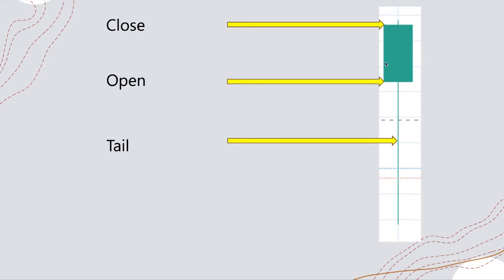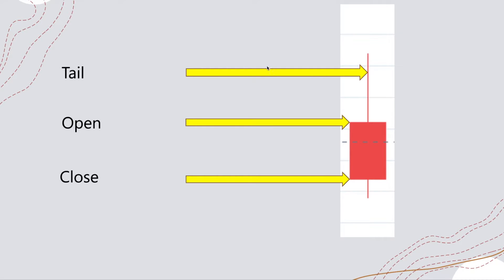That shows you that it closed green, higher than it opened, as opposed to the next one which is a red candle. You can see where it opened here in the middle, and because there's a tail, it moved all the way up to where the tail was and down to where the tail was, and then closed lower than where it opened. That is why it closed as a red candle.